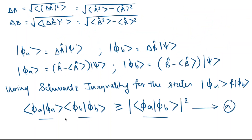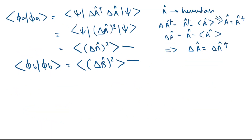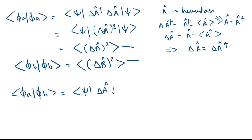Now let's evaluate the right-hand side. Bra-phi-a ket-phi-b equals bra-psi delta-A-cap delta-B-cap ket-psi, which is equal to the expectation value of delta-A-cap times delta-B-cap.